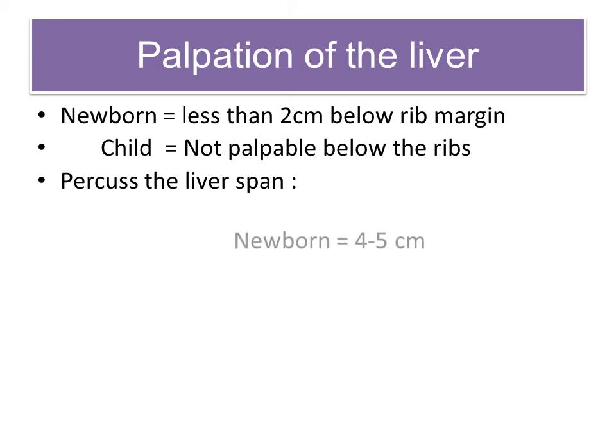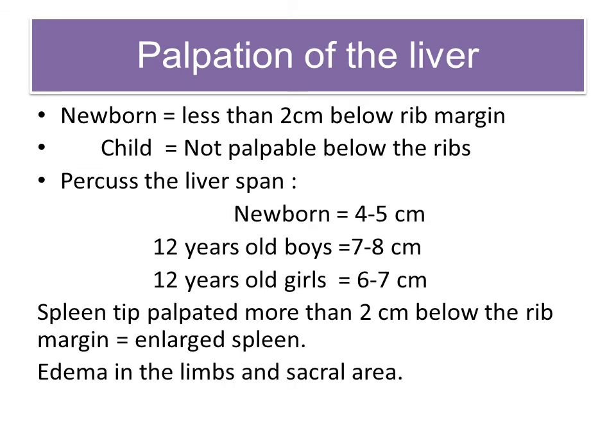Palpation of the liver can give an indication of right-sided heart function. Backup of flow on the right side can quickly cause engorgement of the liver. In general, the normal liver may be felt up to 2 cm below the costal margin. Measure the liver span, and if hepatomegaly is present, splenic enlargement should be determined. It is not always abnormal to feel the spleen tip in children; however, a spleen tip more than 2 cm below the rib margin is indicative of an enlarged spleen. Assess for dependent edema in the limbs and sacral area.